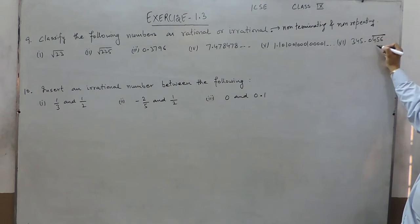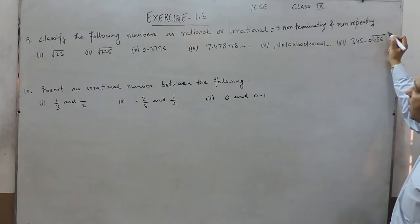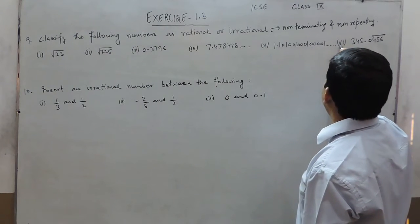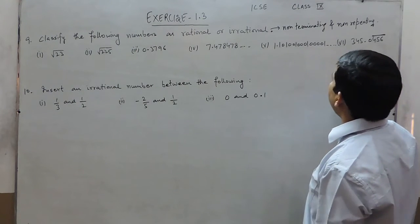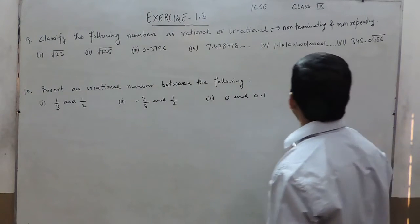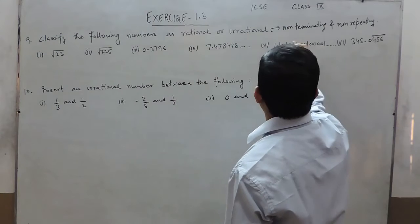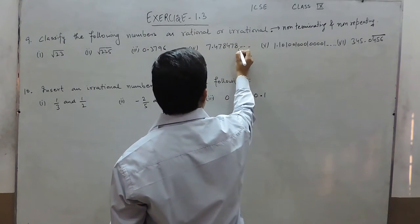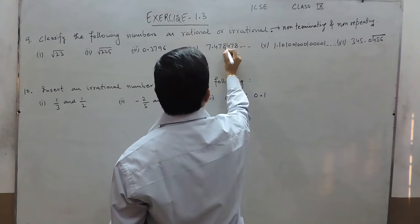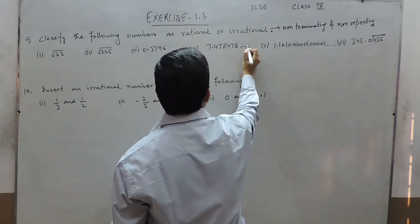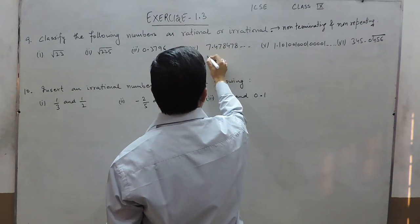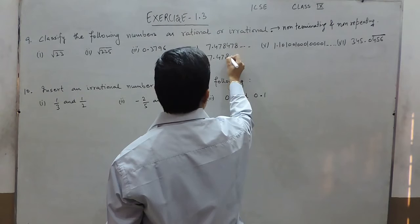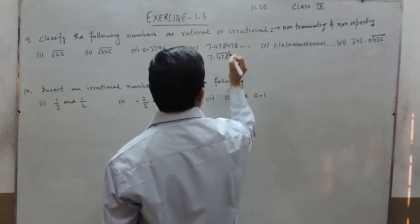A bar above digits actually means the digits are repeating. When we write dash dash dash, it means the digits are not repeating and there is no bar. For example, 478478 — these digits are actually repeating themselves, and this can also be written as 7.478 with a bar.